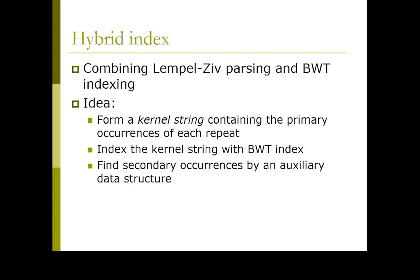The first one is the hybrid index — invented independently by three groups — combining the best parts of Lempel-Ziv parsing and Burrows-Wheeler indexing. The rough idea is that you form something called a kernel string containing the primary occurrences of each repeat in this huge collection. You index the kernel string, which is no longer repetitive and is small, using normal BWT indexing. For all occurrences there's another data structure — also kept small — to find secondary occurrences, which I'll focus less on here.